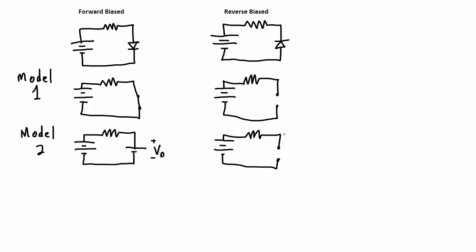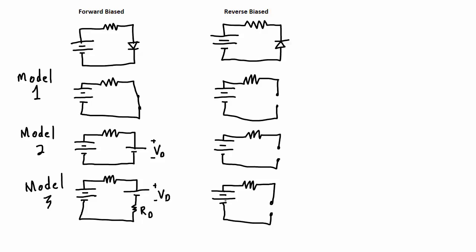In Model 2, a forward biased diode is modeled as a voltage source with a small voltage that has the opposite polarity as the actual voltage source. The reverse biased diode in Model 2 is also modeled as an open, just like in Model 1. In Model 3, the forward biased diode is modeled as a voltage source in series with a very small resistance, and the reverse biased diode is modeled as an open, just like in Models 1 and 2.